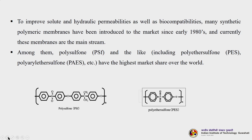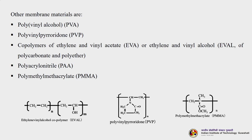To improve solute and hydraulic permeability as well as biocompatibility, many synthetic polymeric membranes have been introduced since the early 1980s and are currently mainstream. Among them, PSU polysulfone and related polymers including polyethersulfone (PES) and polyaryl ethersulfone (PAES) have the highest market share worldwide. Other membrane materials include PVA (polyvinyl alcohol), PVP (polyvinylpyrrolidone), copolymers of ethylene-vinyl acetate or ethylene-vinyl alcohol, polycarbonate, polyether, polyacrylonitrile, polymethyl acrylate (PMA), and PMMA.